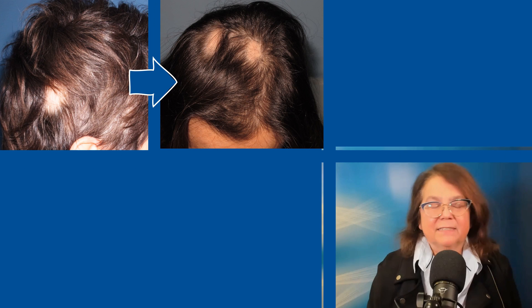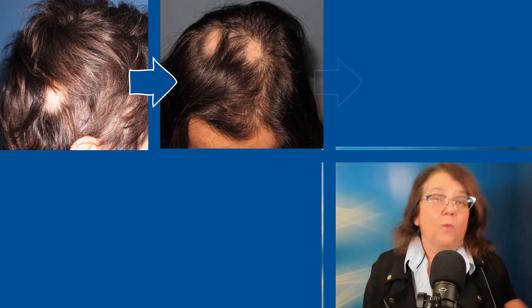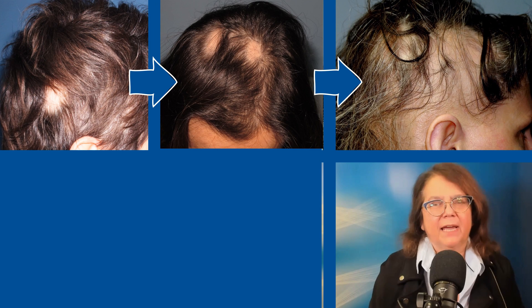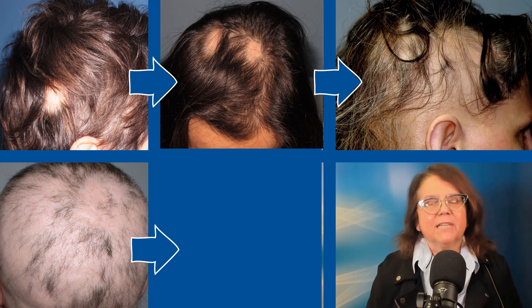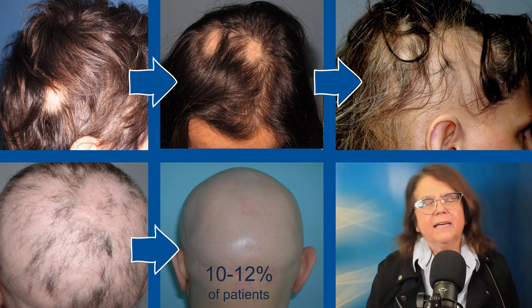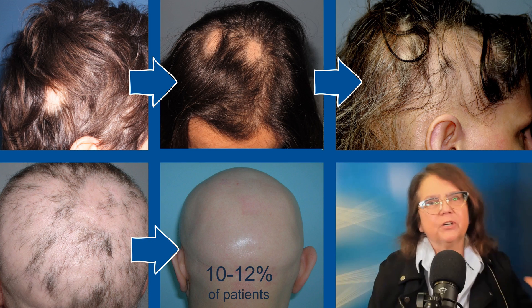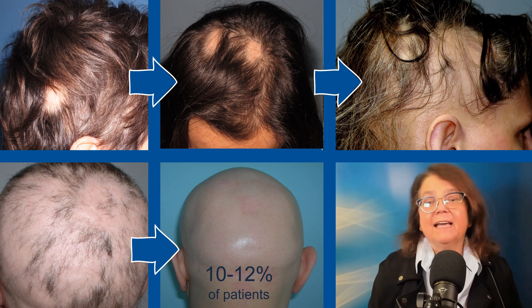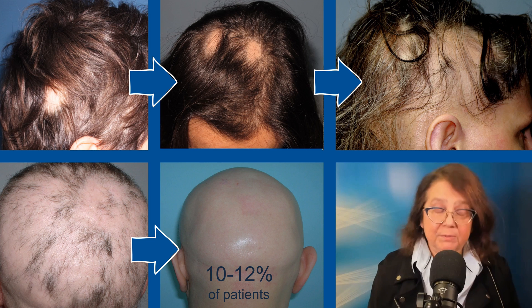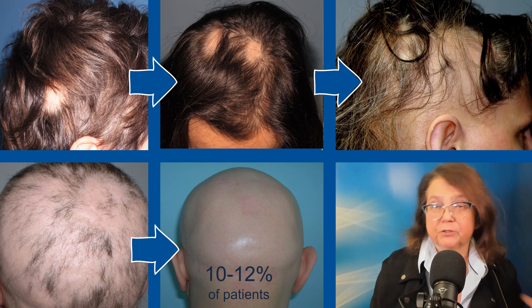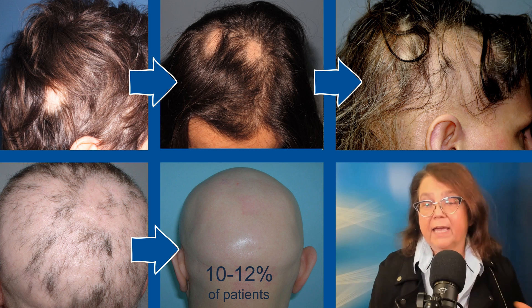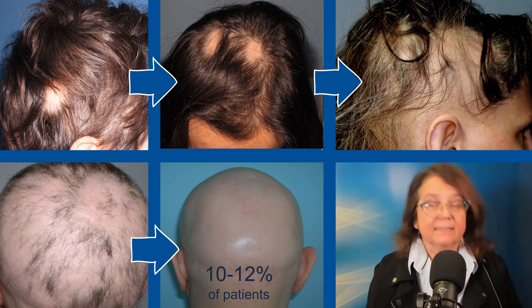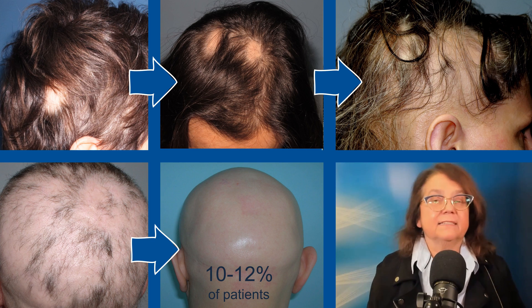This is how alopecia areata starts. In most cases there is one patch which has no hair, two hairless patches, sometimes more. Sometimes they become confluent and form bigger areas with no hair, and in extreme cases there will be alopecia totalis or alopecia universalis with no hair at all, as in the last case in this image.